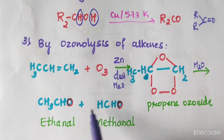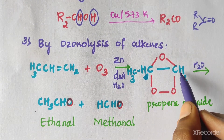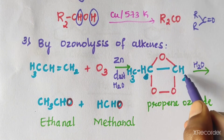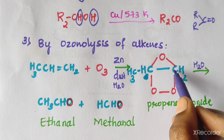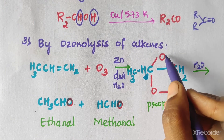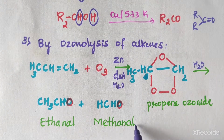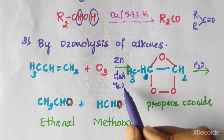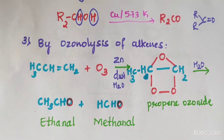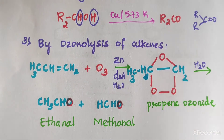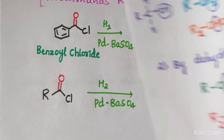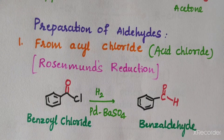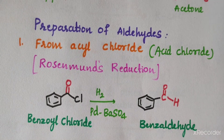After hydrolysis of the ozonide, one fragment is CH3CHO (ethanal) and the other fragment is HCHO (methanal/formaldehyde) — one carbon, one oxygen. This is the methanol formation by using zinc dust and water in ozonolysis.